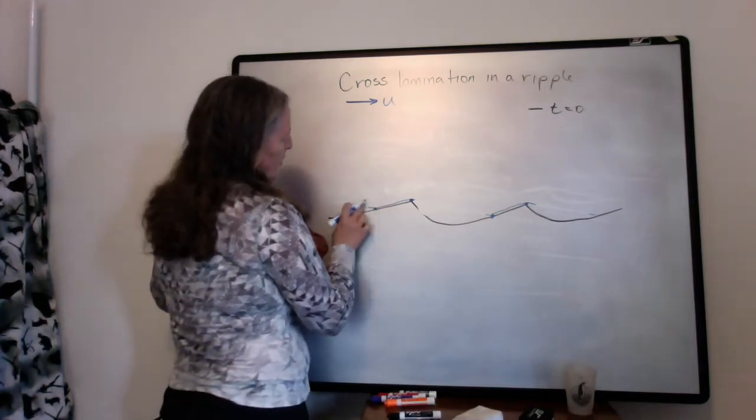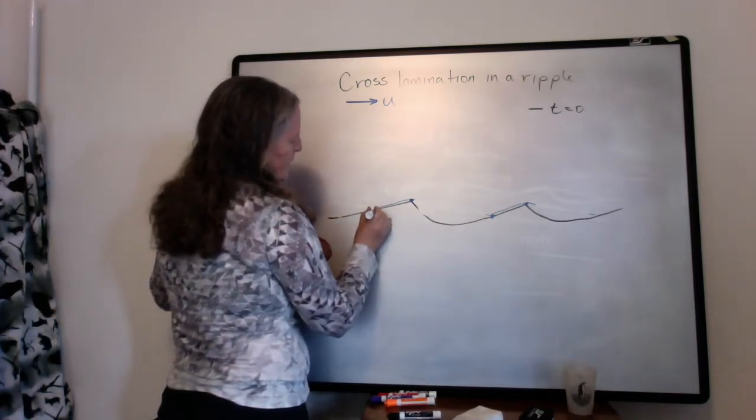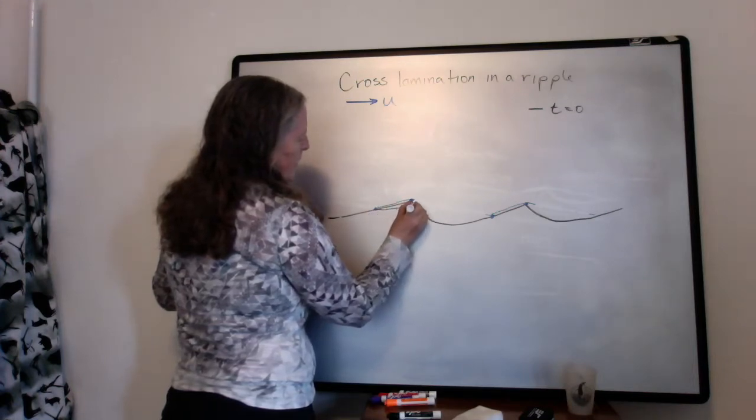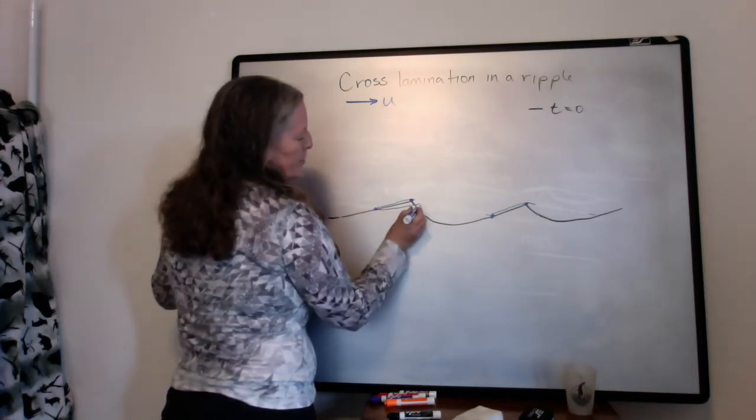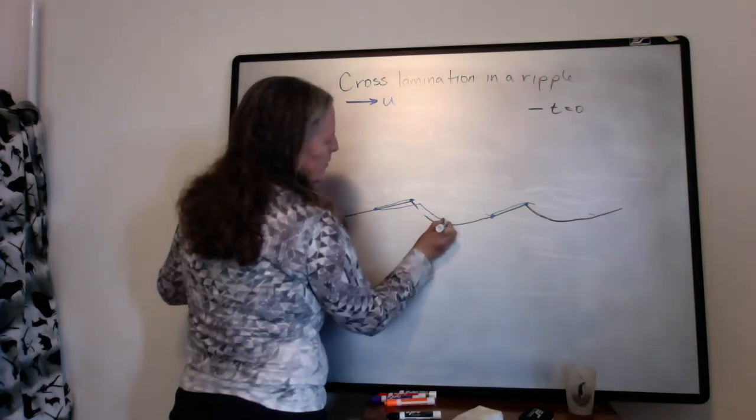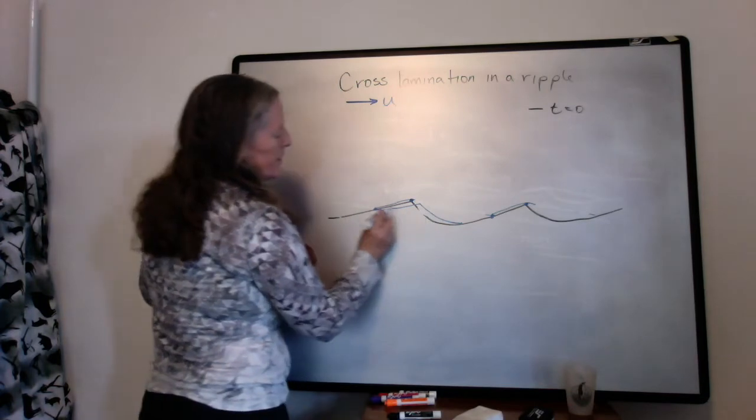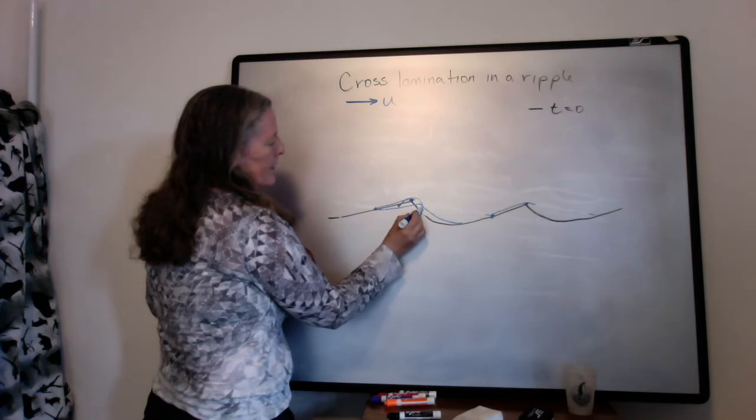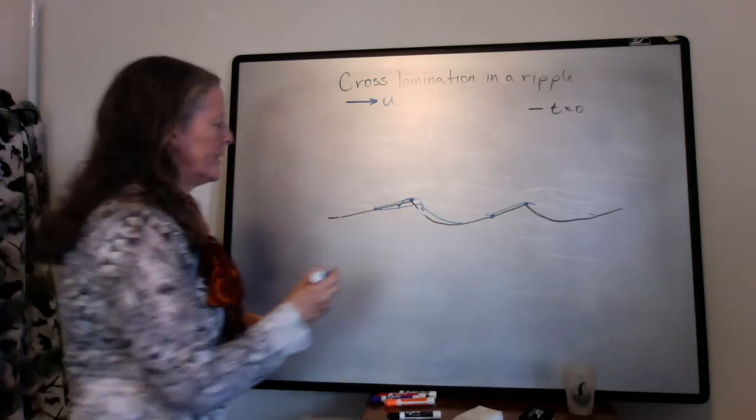So what happens is you have erosion in this area. So this part tends to go down, but you have deposition in this area here. So this part of the line goes up. So basically, the grains here have migrated into this area here.